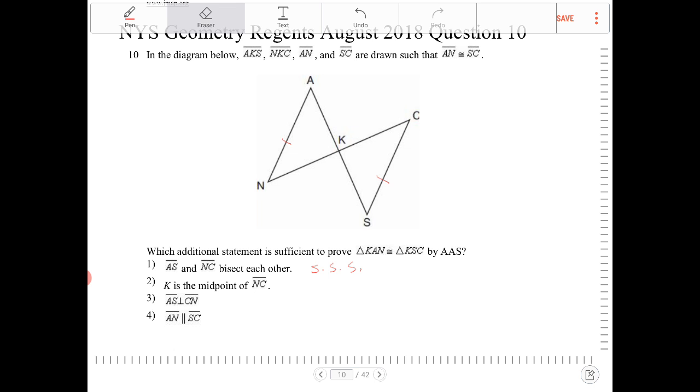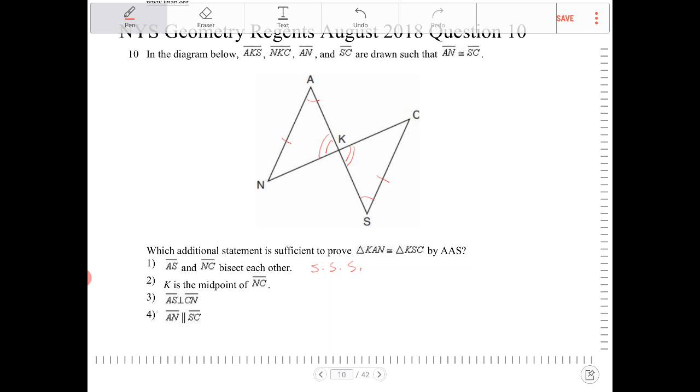AN is parallel to SC. Well, when two lines are parallel cut by a transversal, then what will happen is we'll have alternate interior angles congruent. And same thing with the angles on the other side there. These two angles are also going to be congruent. This will not necessarily prove that the two triangles are congruent based on AAS. However, this right now, the way that I have it drawn, it's ASA. What will prove the triangles congruent based on AAS is the use of the vertical angles here. So now we have an AAS situation. So yes, option four.